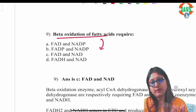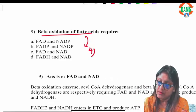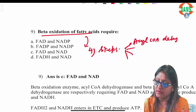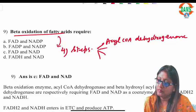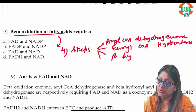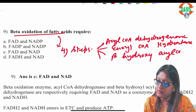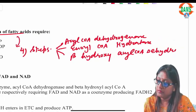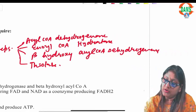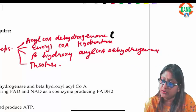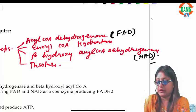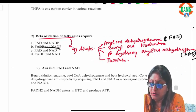Question nine: beta oxidation of fatty acid requires what? Beta oxidation generates a lot of ATP and has four steps in each cycle: acyl-CoA dehydrogenase activity, enoyl-CoA hydratase activity, beta-hydroxyacyl-CoA dehydrogenase activity, and thiolase activity. Acyl-CoA dehydrogenase needs FAD to generate FADH2, and beta-hydroxyacyl-CoA dehydrogenase needs NAD for its action. So we need FAD and NAD for beta oxidation.